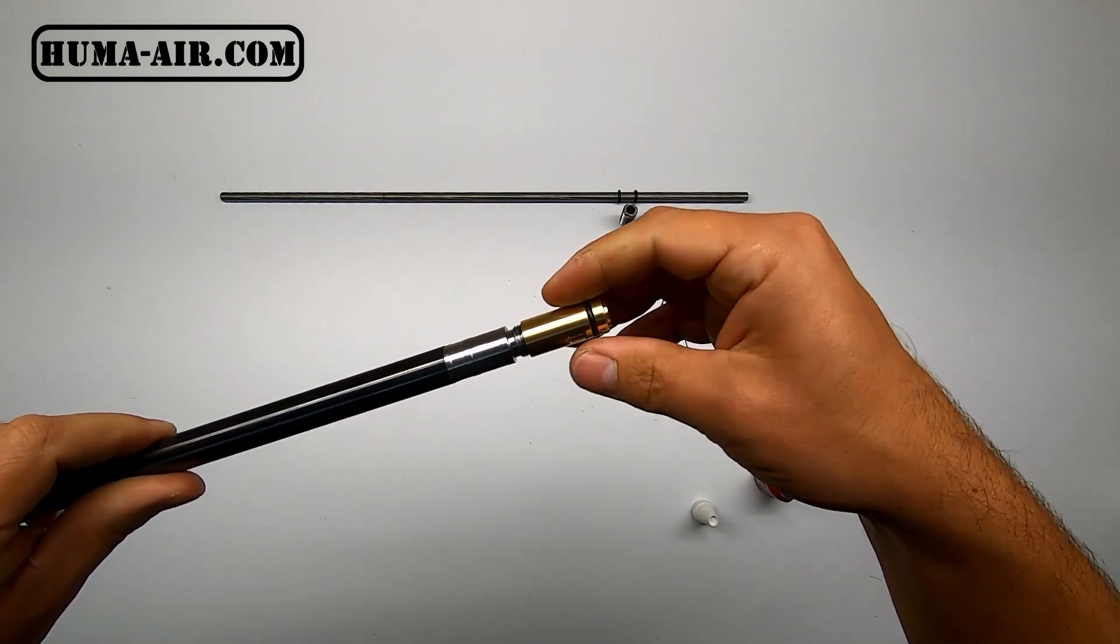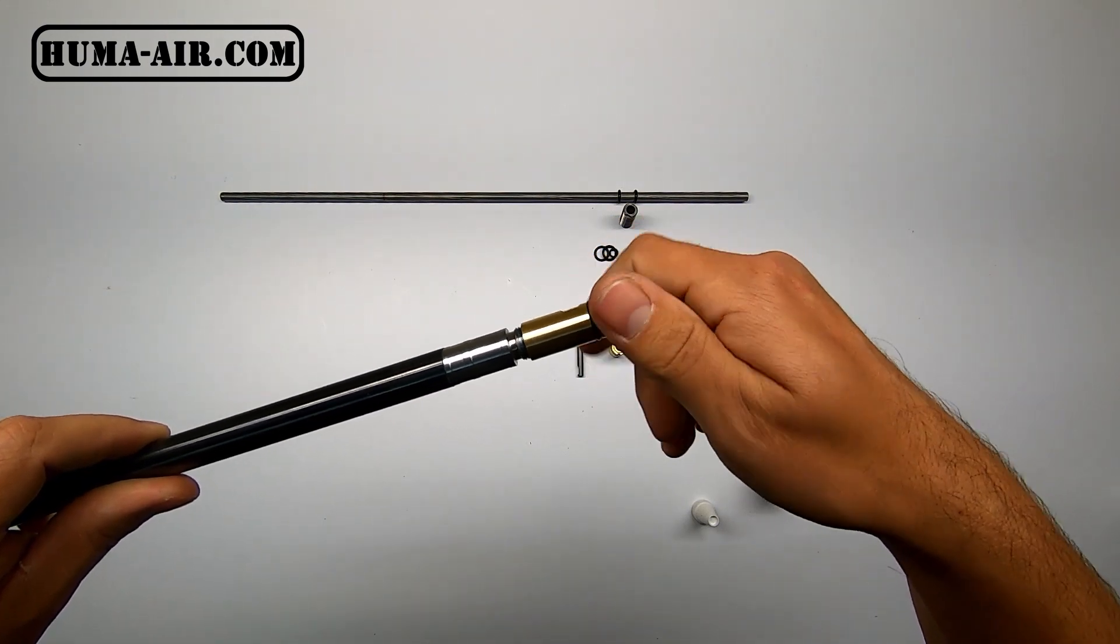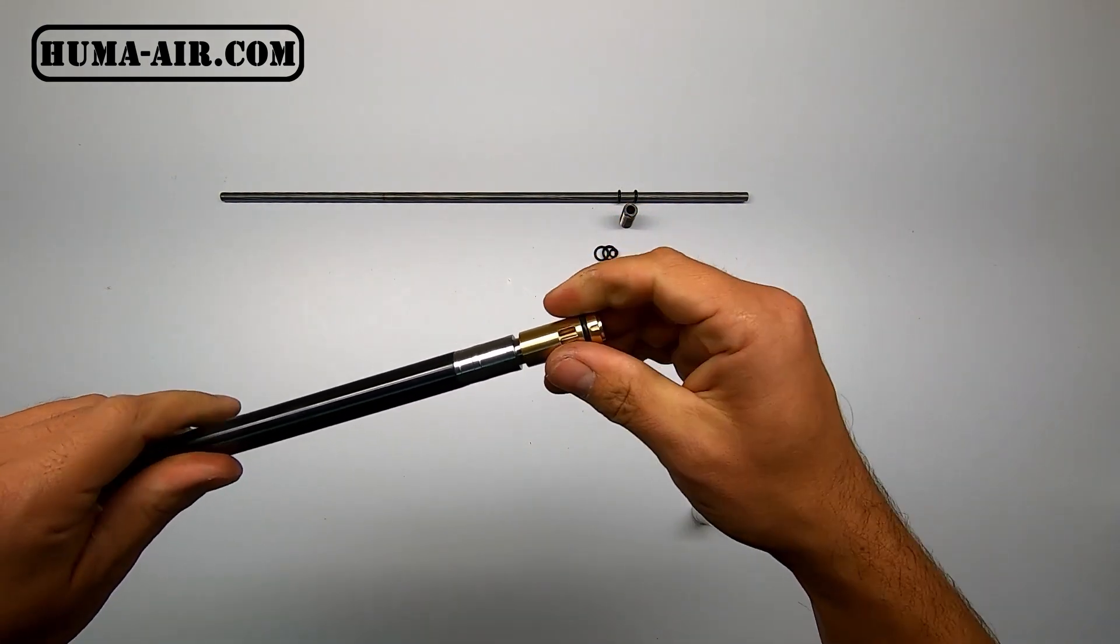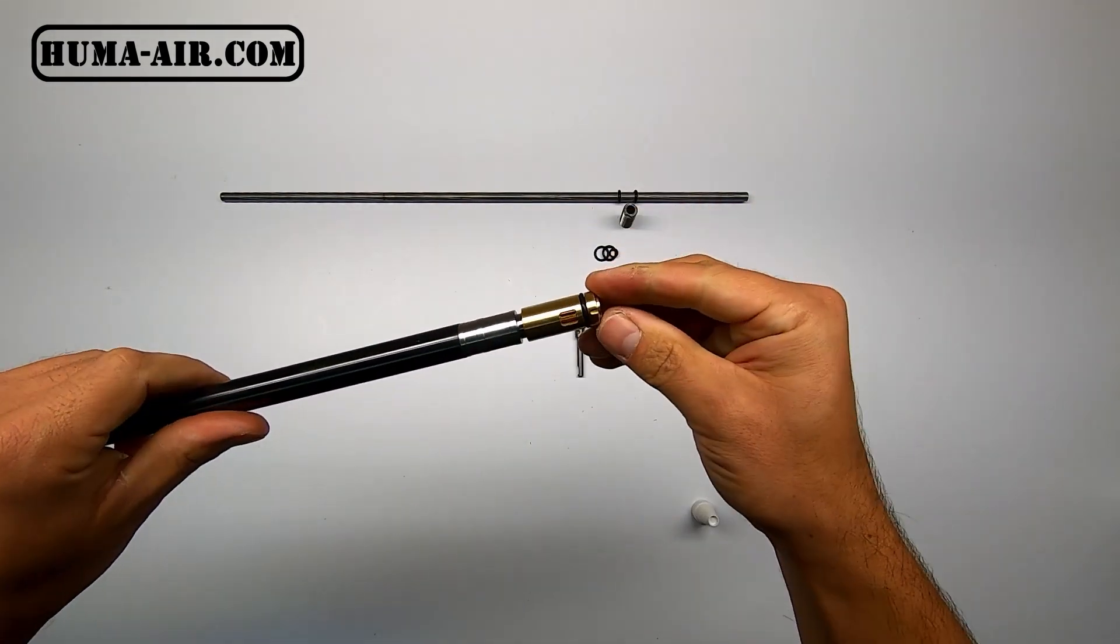And back it out just a little bit so the Loctite gets even divided between all the threads. Make sure it's tight.